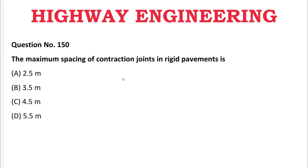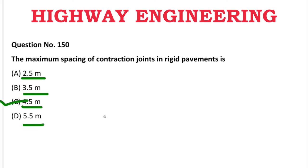Next question: The maximum spacing of contraction joints in rigid pavement is — A: 2.5 m, B: 3.5 m, C: 4.5 m, D: 5.5 m. The correct answer is C, 4.5 meters. We will see more in the next video. Thank you.